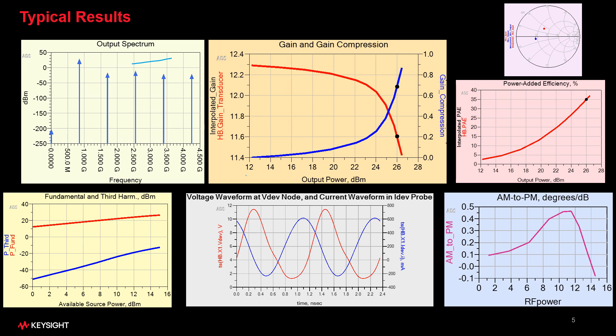Since we swept the power, we can look at the gain compression curve. In the upper right are the input and output impedances on a Smith chart. Just below that, power added efficiency.